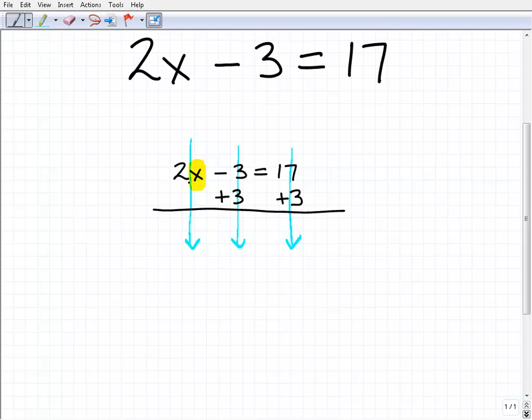This is going to be 2x plus nothing - there's nothing under the 2x, so it's just 2x. Then negative 3 plus 3 is 0, and that's what I wanted. I wanted to get rid of that negative 3 on the left-hand side.